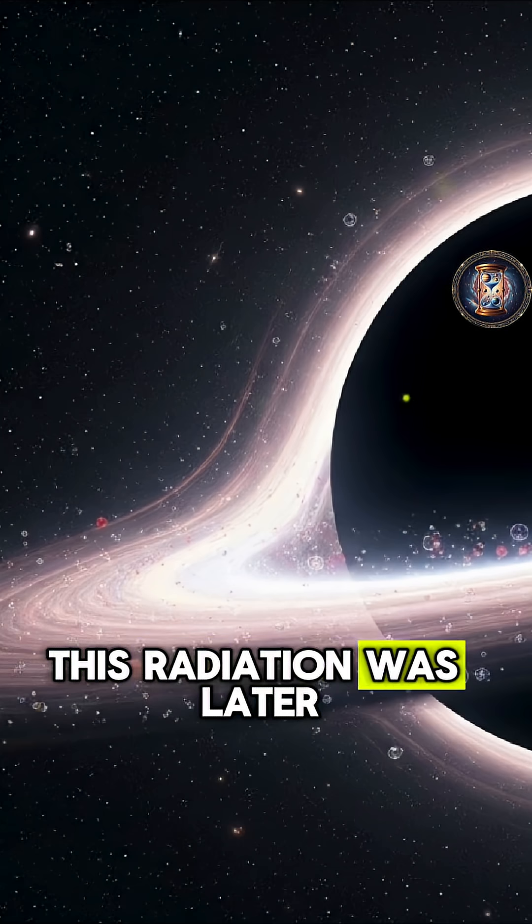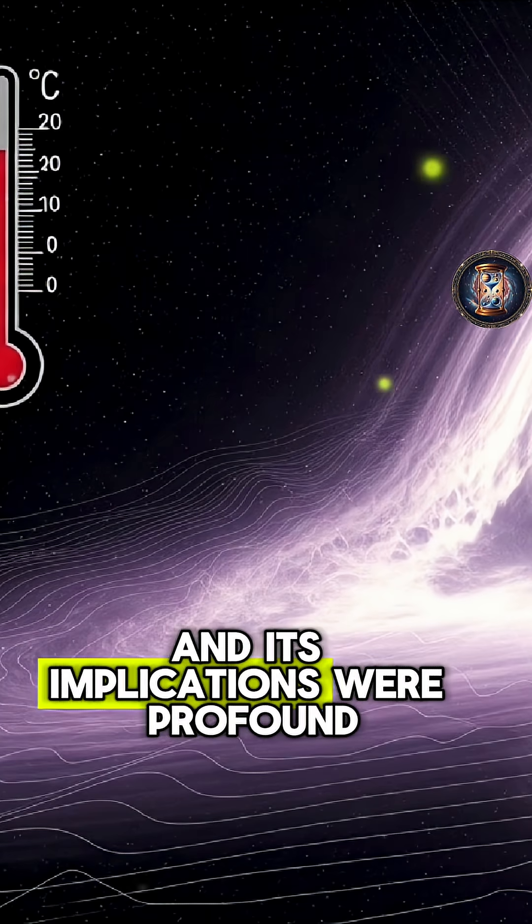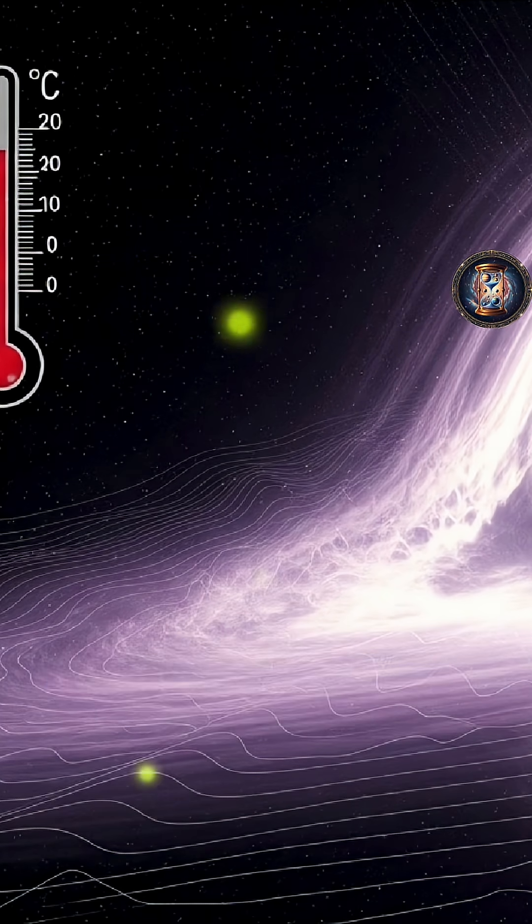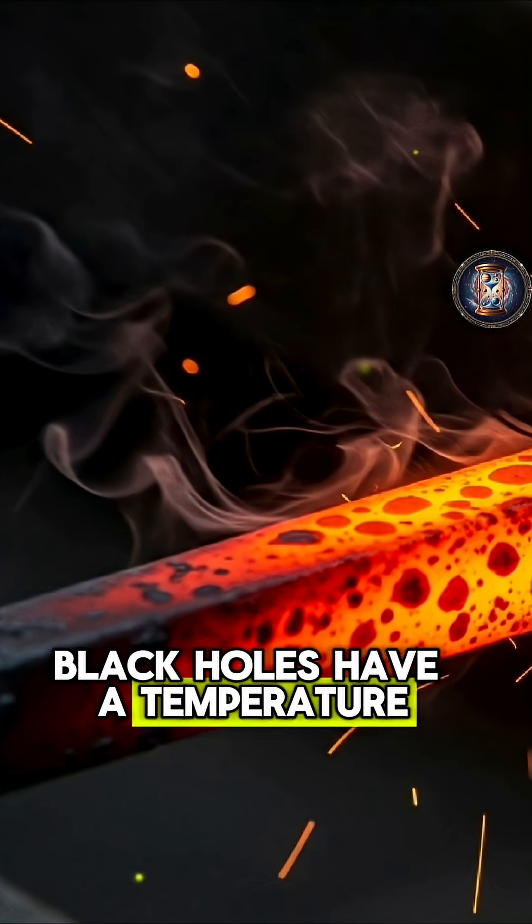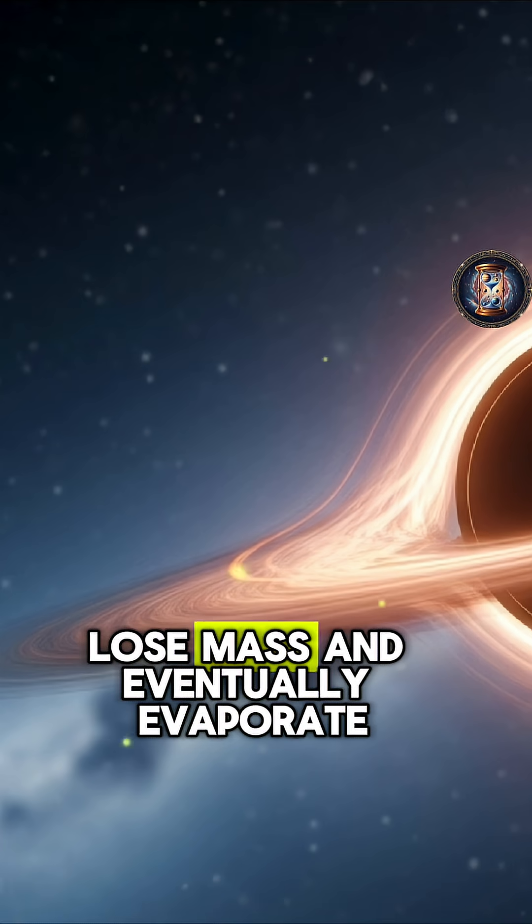This radiation was later named Hawking radiation, and its implications were profound. Black holes have a temperature, and therefore they can lose energy, lose mass, and eventually evaporate, vanishing from existence.